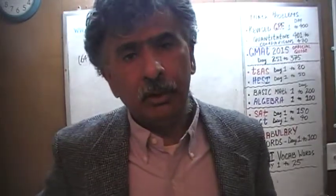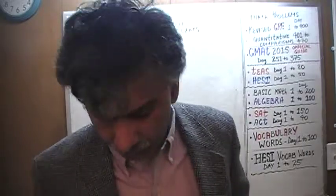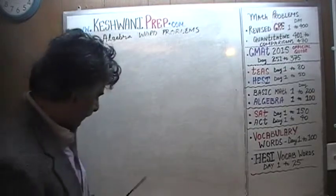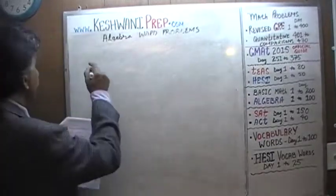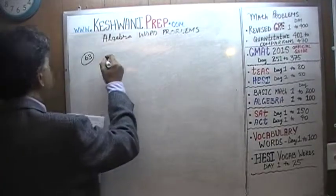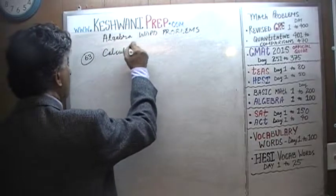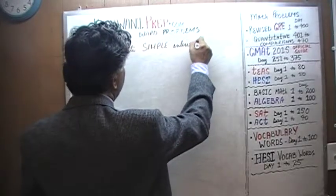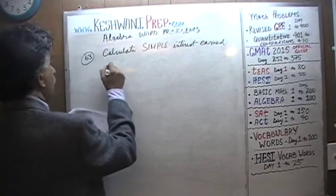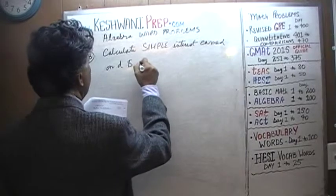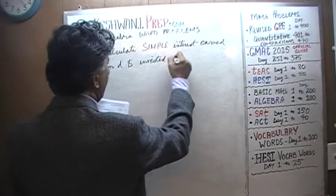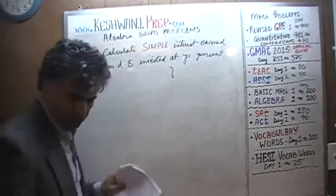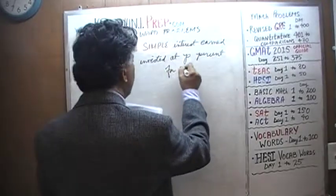We are here because we want to learn how to solve algebra problems. Today we will begin our lesson with problem number sixty-three — not sixty-four, problem number sixty-three. Let's take a look at it. We are being asked to calculate simple interest earned on D dollars invested at P percent for N years.